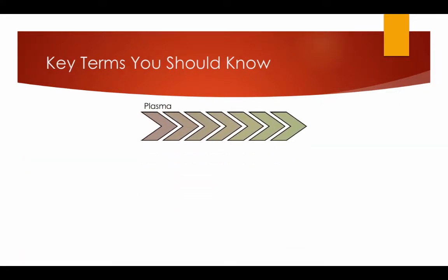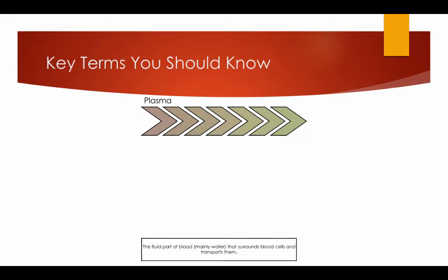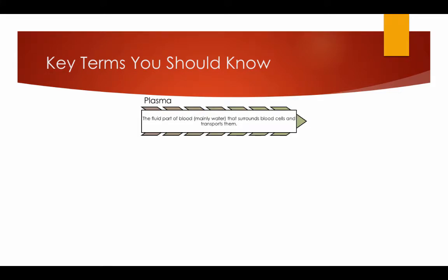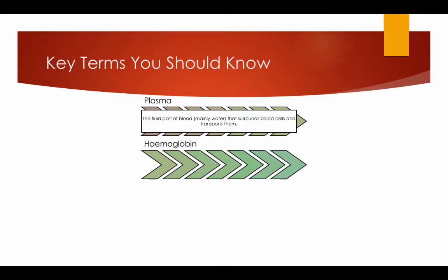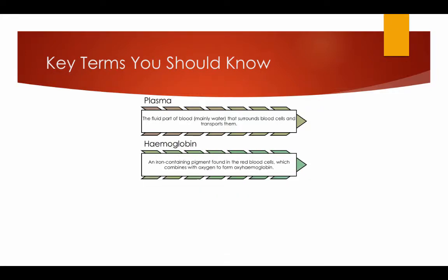Key terms you should know. Plasma: the fluid part of the blood that surrounds blood cells and transports them. Haemoglobin: an iron-containing pigment found in the red blood cells which combines with oxygen to form oxyhaemoglobin.